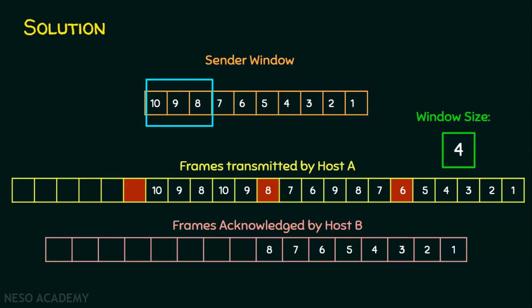After retransmission, frame 8 is acknowledged and the window slides — there is no more data to send. Frame 9 is acknowledged, the sliding window slides again. Frame 10 is also acknowledged, and the current sliding window is now empty. The total number of frames transmitted by host A is counted: 1, 2, 3, 4, 5, 6, 7, 8, 9, 10, 11, 12, 13, 14, 15, 16, 17 — totaling 17 frames.